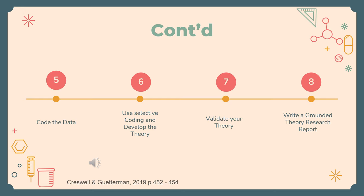Step 7: Validate your theory. In this step, it is important to determine if your theory makes sense to participants and is it an accurate rendering of events and their sequence in the process. In Creswell and Cetterman's text, they suggest that in grounded theory research, validation is an active part of the process of research. Step 8: Write a grounded theory research report. The structure of your report will vary from a flexible structure in the emerging and constructivist design to a more qualitatively oriented structure in systematic design. Compared with other qualitative designs, the structure of a grounded theory study is scientific and includes a problem, method, discussion, and a result.